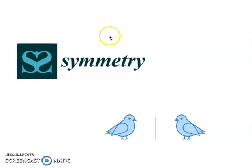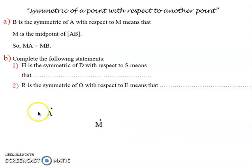Good evening, grade 8 students. In this video, I'm going to explain the idea about symmetry. We have two kinds of symmetry. The first kind is symmetric of a point with respect to another point.